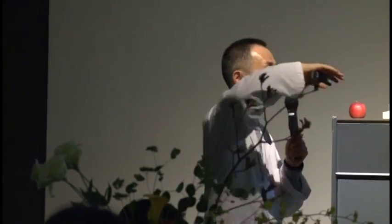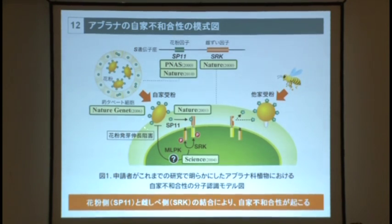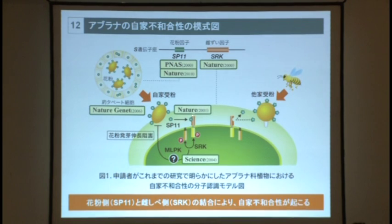花粉が葯の中でできます。葯というのは、おしべの先端の黄色い袋です。そこに、その一番内側の細胞、タペート細胞というんですが、そこから自分だという情報を吹き付けてもらいます。簡単に言うと、チョコボールのような例えで、真ん中にピーナッツがあって、キャラメルの周りにチョコレートを吹きかけるときに、丸い形に吹きかけたものと、五角形に吹きかけられたものがあるわけです。そうすると、彼女の方は自分だという情報が来たら困るので、自分だという鍵に対して丸いものが刺さるようにできています。